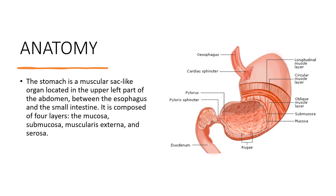We'll start off with the anatomy of the stomach. The stomach, as we all know, is a muscular sac-like organ located in the upper left part of the abdomen, between the esophagus and the small intestine. It is a key component of the digestive system, responsible for breaking down food into smaller particles and mixing it with digestive juices before releasing it into the small intestine. The stomach wall is composed of four layers: the mucosa, submucosa, muscularis externa, and the serosa.